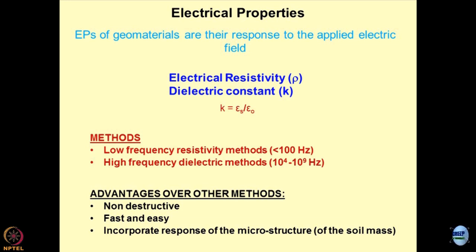The advantages of these techniques over other methods is that they are non-destructive, fast, and easy. Most of the time, these techniques can be utilized under in-situ conditions — you just insert a probe or sensor and get the properties. For accuracy, you rely on the measurements and repeat experiments to see how reliable the results are. When we talk about electrical properties of geomaterials, the microstructure of the soil gets revealed. One of my PhD scholars, Dr. Suchit Gumaste, tried to quantify the degree of anisotropy in the soil mass by quantifying the degree of flocculation and dispersion of clays — and the measurements were quite precise.